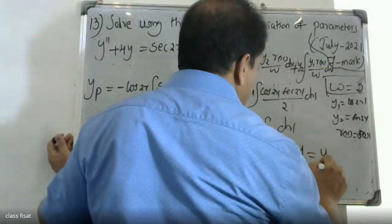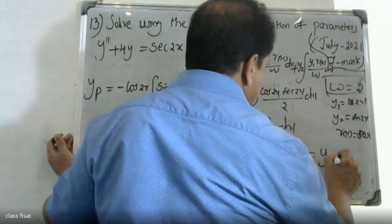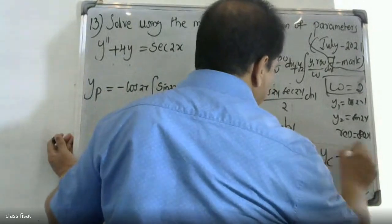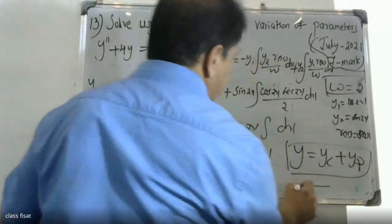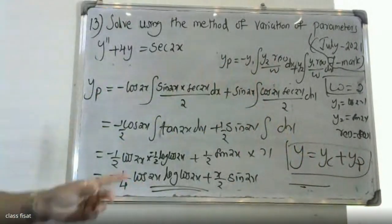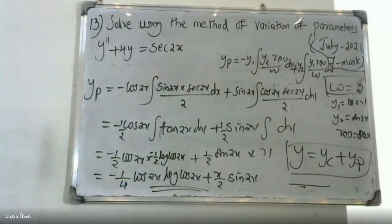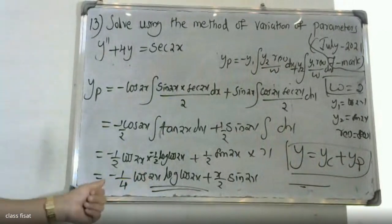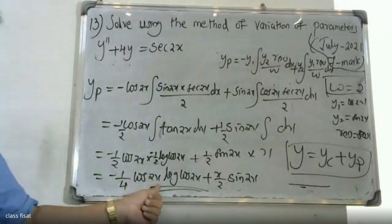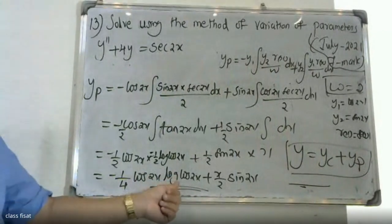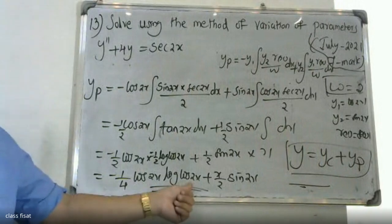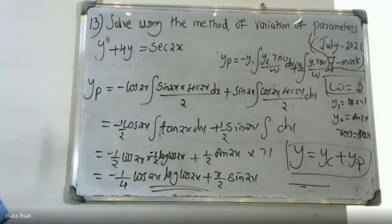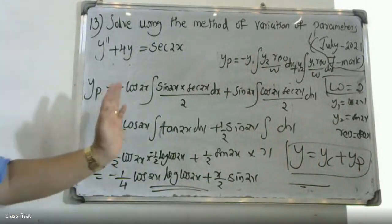Therefore the complete solution is y equal to yc plus yp, which is c1 cos 2x plus c2 sin 2x minus 1 by 4 cos 2x log cos 2x plus x by 2 sin 2x.